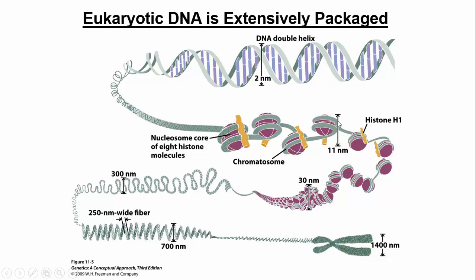The dimension of the chromatosome is about 11 nanometers in diameter. The DNA wraps around the nucleosome core about two times, almost two times. Then once we get to the next level of compaction, we have what we call beads on a string. Those will further compact amongst themselves, and we call these things 30 nanometer fibers.